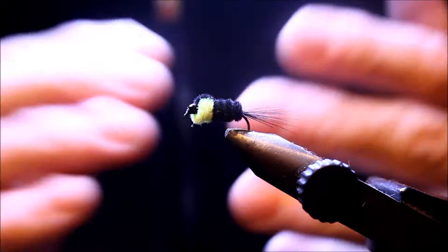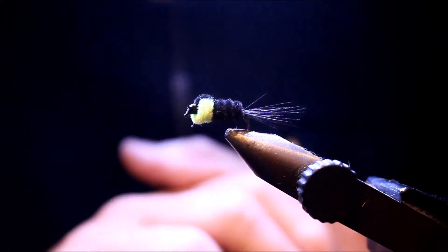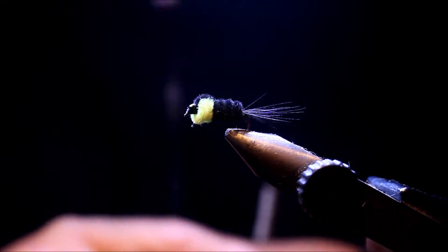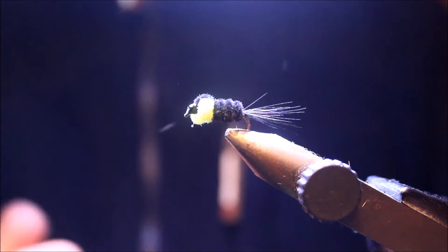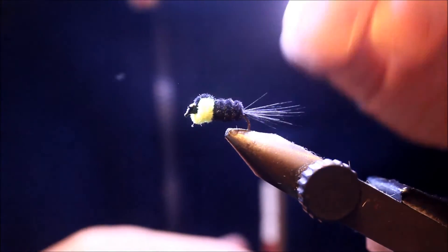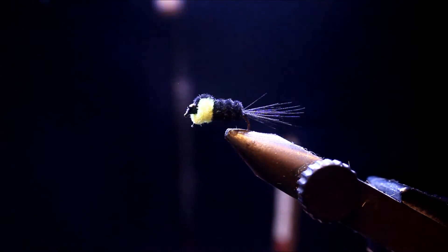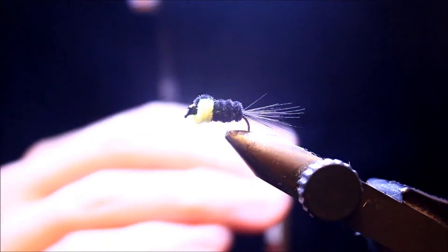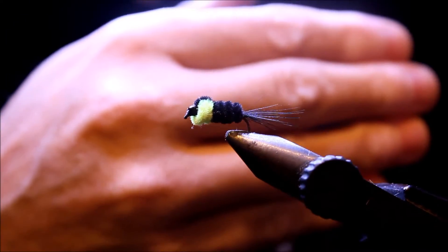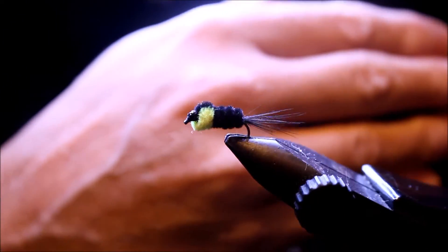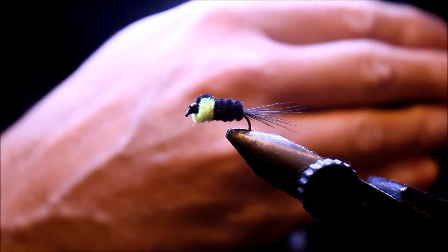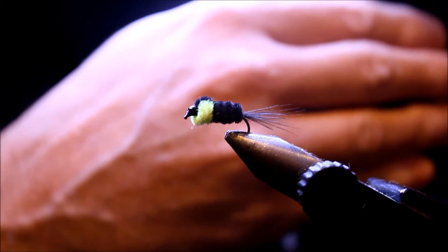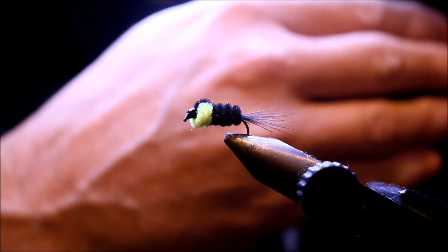Moi j'aime bien l'utiliser en pointe sur un train de mouches avec une mouche un peu plus légère en potence, ou toute seule simplement à vue à distance. C'est une mouche qui a vraiment un gros gros potentiel, une grosse réussite sur les réservoirs de ma région. Ça fait partie des mouches dont je ne peux pas me passer aujourd'hui. Je rappelle: la Montana nymphe.